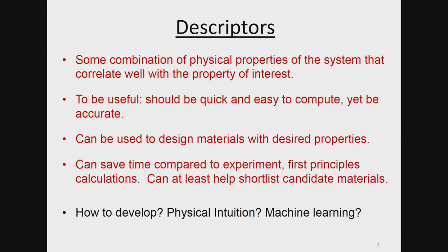I want to find descriptors for this. Most of you know what descriptors are, but briefly: they are some combination of physical properties of the system that correlate well with the property of interest. The important thing is that they should be very quick to compute — faster to compute than either doing the ab initio calculation or doing the experiment. They may not be as accurate as either of those, but they generally help you narrow down the space in which you're looking for candidate materials, saving a lot of time compared to doing the experiment or the DFT calculation.